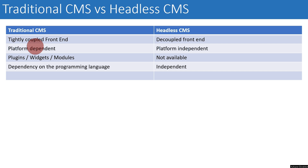Traditional CMS is platform dependent, meaning the front end and back end are tightly coupled. For example, if you are using WordPress and you need to change the theme, you have to do it within WordPress only. If WordPress does not support React, React Native, or Angular, you can't use them because traditional CMS forces you to work within its boundaries. Headless CMS gives you complete freedom on the front end — today you can use React, and three years down the line you can switch to any newer technology or platform without any issue.